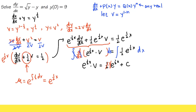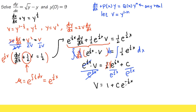Since v equals y to the 1/2, which is the same as square root of y, we can write: square root of y equals 1 plus c e^(-x/2). This is actually the same result we had earlier from the other method.